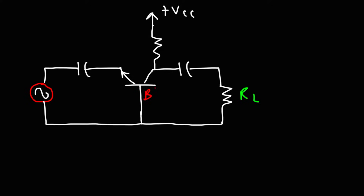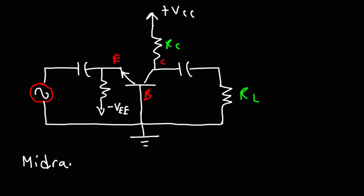This is the base of the transistor, this is the emitter, and this is the collector. This is RC. We also have another resistor going towards negative VEE — that voltage is lower than the ground voltage, it's negative with respect to ground. So that's the circuit for the common base amplifier. One characteristic is that it has a mid-range voltage gain, very similar to the common emitter amplifier.